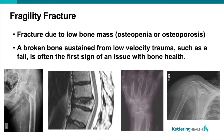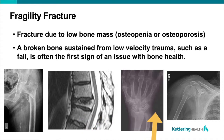A fragility fracture is defined as a fracture sustained from low-velocity trauma, such as a fall from standing, and usually occurs when there's an underlying issue with bone density such as osteopenia or osteoporosis. The pictures at the bottom of the screen show different examples of fragility fractures: from left to right, a fracture of the hip, a fracture of the spine, a fracture of the wrist, and a fracture of the proximal humerus or shoulder.